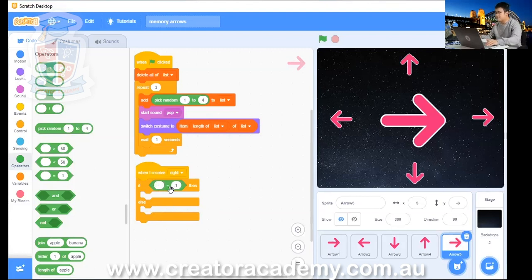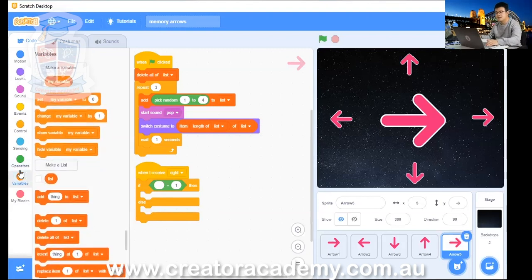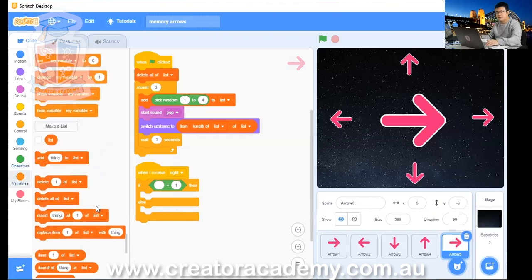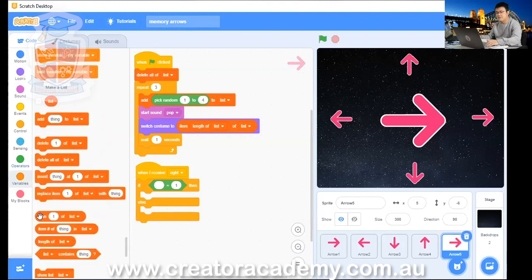If what is equal to one? Well, we said that it's the first item in the list because it's the first thing that is added to the list when we do the memory game. So it's item one of list. We go into variables and scroll down to item one of list.